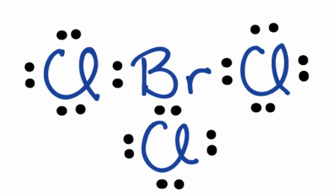So we've filled the octets for the Chlorines, we've used 24 valence electrons, but we have 28 total. So we have 4 more, and we're just going to put them right here: 26 and 28.